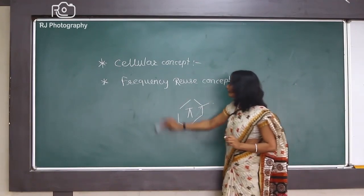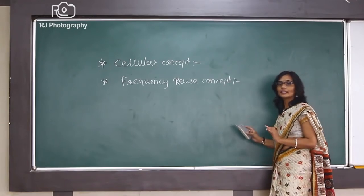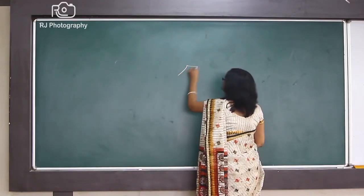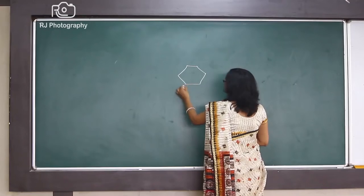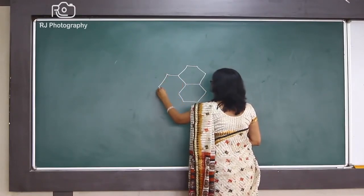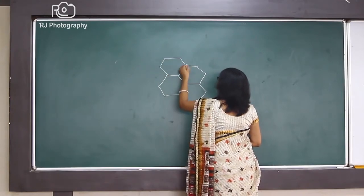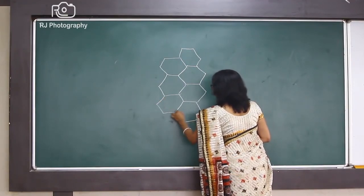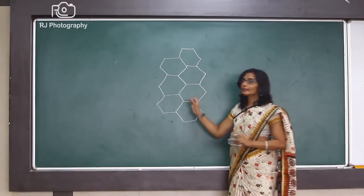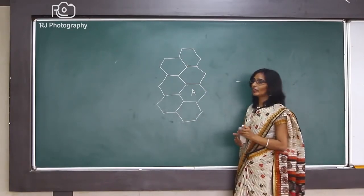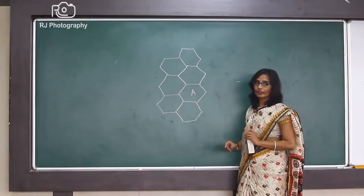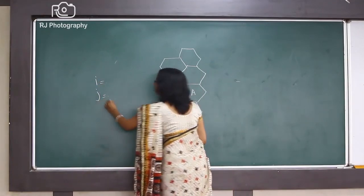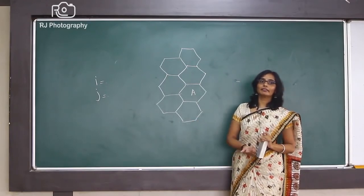There are certain conditions for frequency reuse. Suppose we are going to draw a network of hexagons for this cellular system. To consider the area — suppose this cell is having frequency A — we cannot reuse the same frequency within a neighboring cell. So what we do is take two integer values: one is i and another integer value is j. The condition is that these integer values should be non-negative.